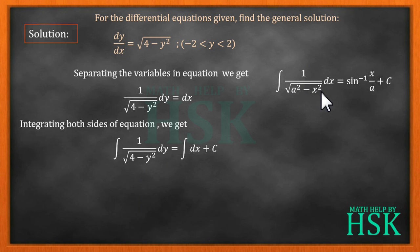Using the formula integration of one upon square root of a squared minus x squared dx equals sine inverse of x upon a, and taking this four as equal to two squared, I can write this as equal to sine inverse of y by two, this as x, and plus c.